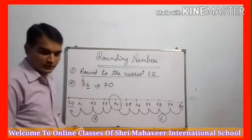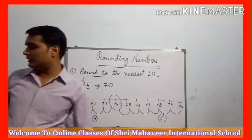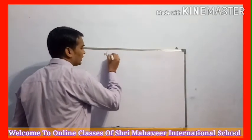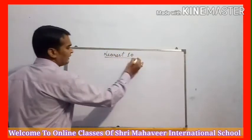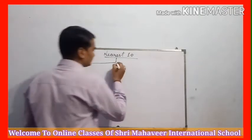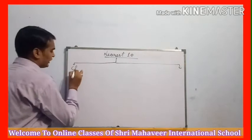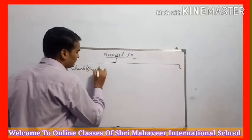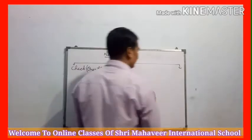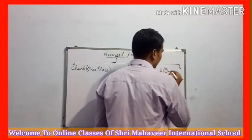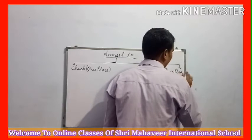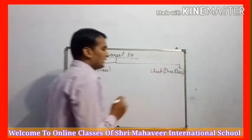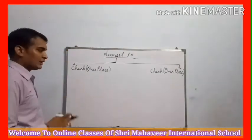अब मैं आपको थोड़ा और easy way में सिखाता हूं. जब कभी हम nearest 10 find करेंगे, तो हमें for example यहां देखना है: nearest 10 find करने के लिए हमें check करना है once place (ones place). जब nearest 10th place find करना है, उसके लिए check करना है ones place.